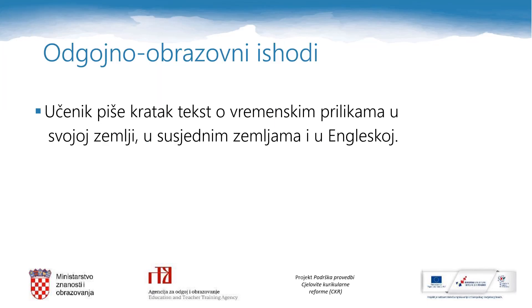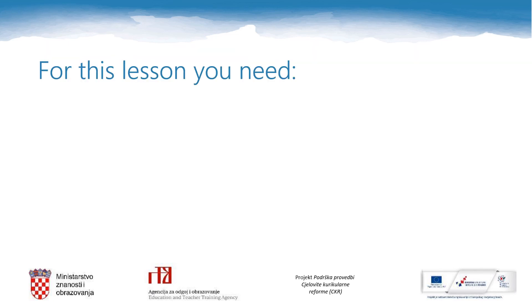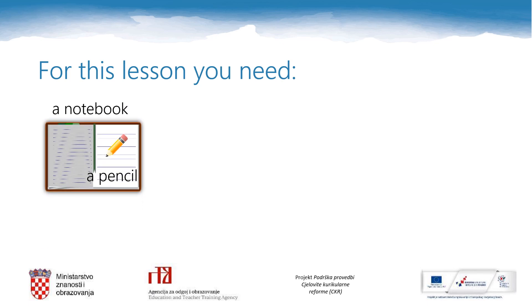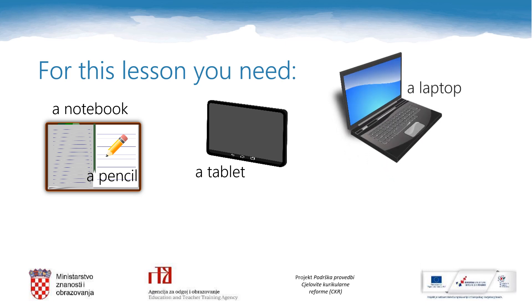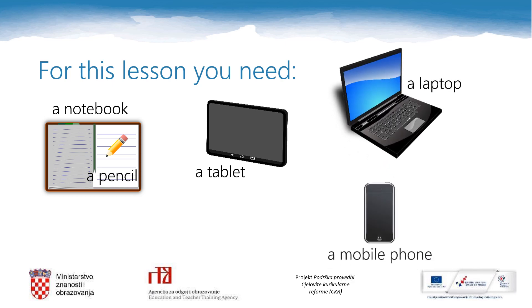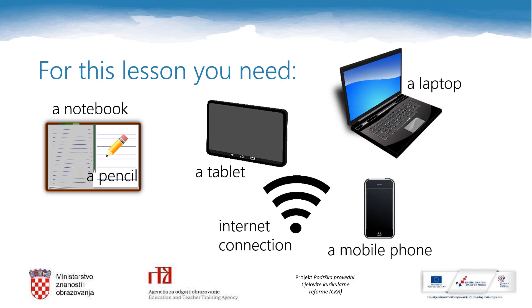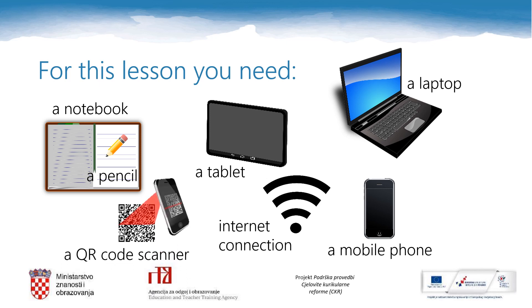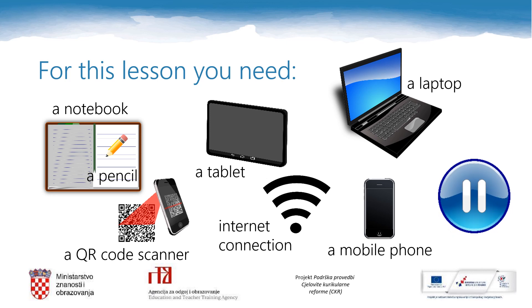By the end of this lesson you will be able to write a short text about weather conditions in Croatia, in our neighboring countries and in England. For this lesson you need a pencil and a notebook, a tablet, a laptop or a mobile phone with internet connection and a QR code scanner. Keep in mind that you can pause this video lesson anytime you need in order to do your task.